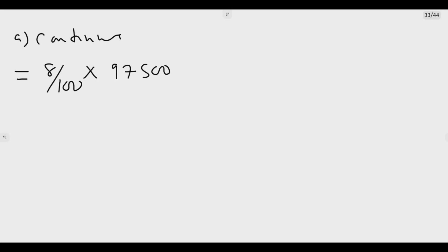So we continue here. We're going to say 8 over 100 multiplied by 97,500. Then I know this 100 and this 500 cancels. So what I mean is 8 times 975.